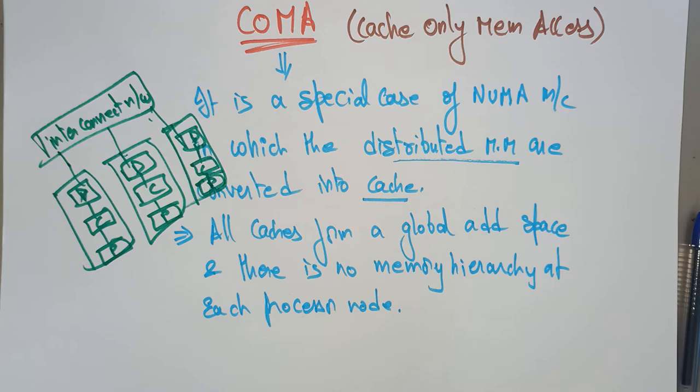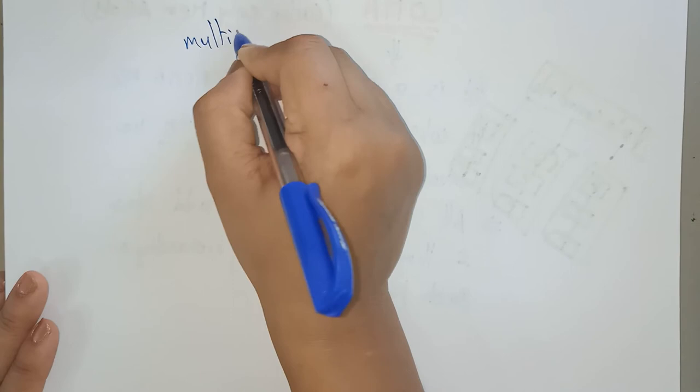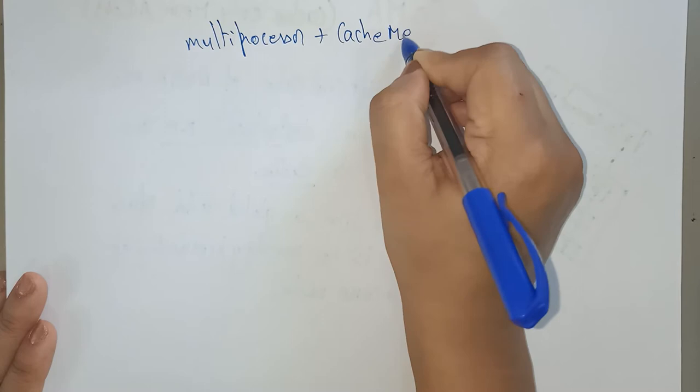So now let's look at the advantages and disadvantages of using COMA. COMA uses cache memory — it is a cache-only memory model. The distributed memory is converted into cache rather than remaining as distributed main memory. In simple terms: multiprocessor plus cache memory equals the COMA model.